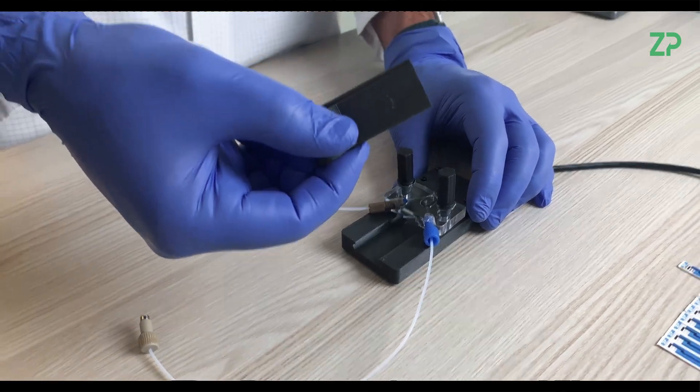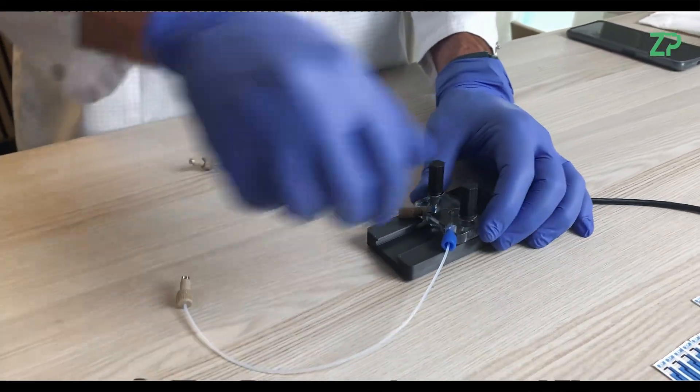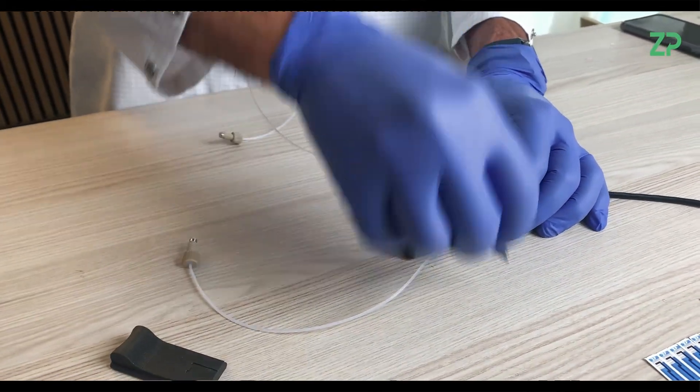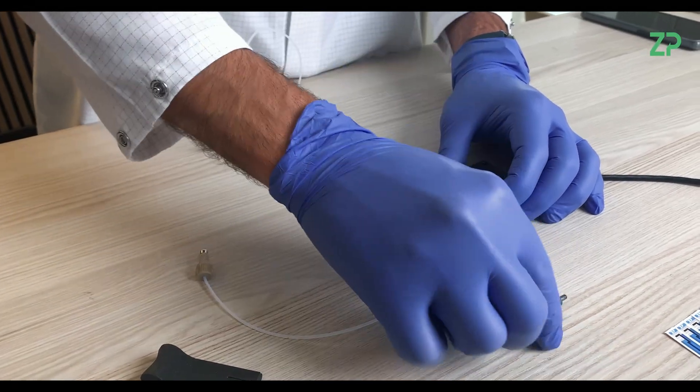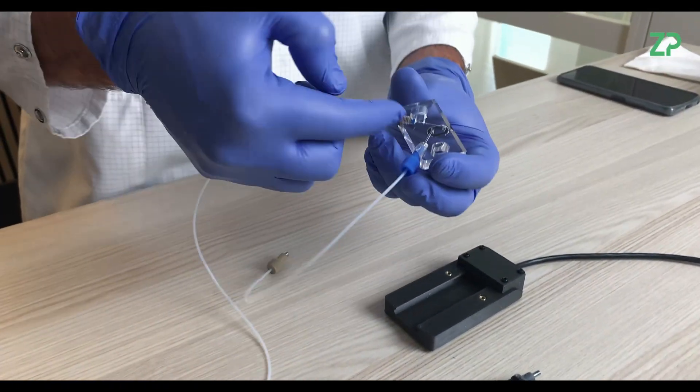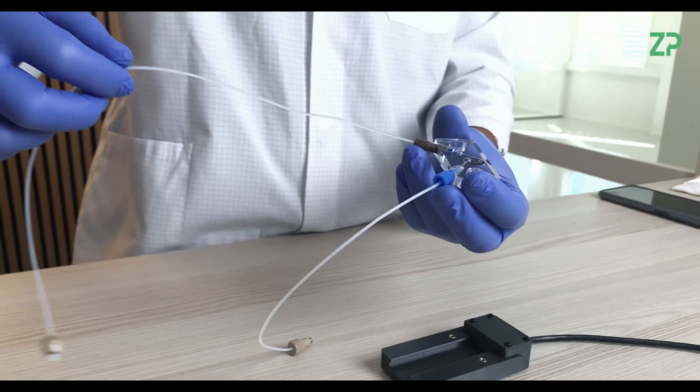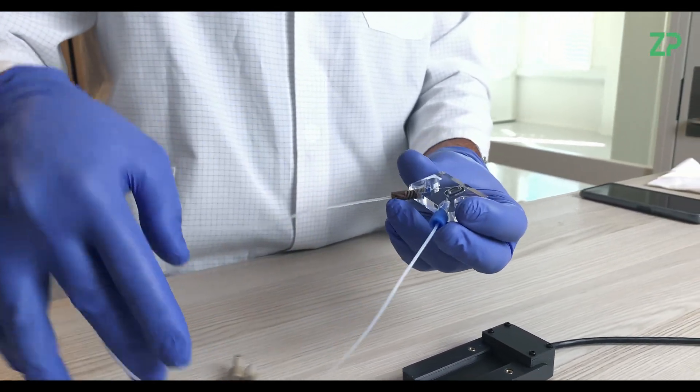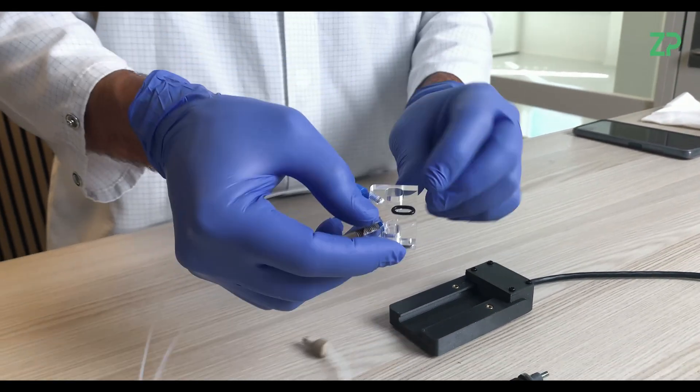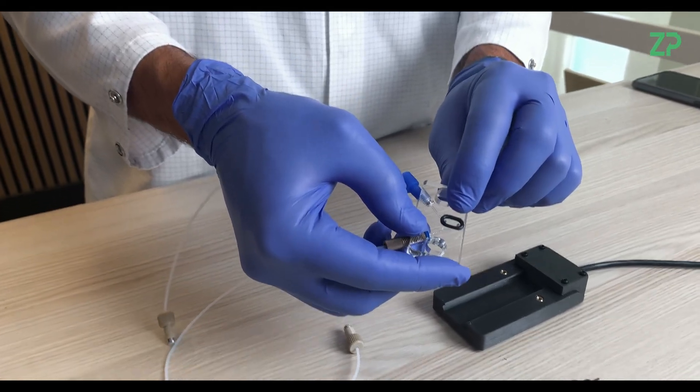So basically, this capillary field adapter is made of three parts. One is actually the sensor holder, the other one has the microfluidic parts where you have the microfluidics coming in and out, so we have the flow chamber basically.